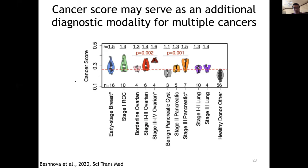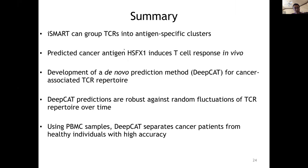We also used independent cohorts to validate cancer score, including early-stage kidney cancer, ovarian cancer, pancreatic cancer from UT Southwestern, and early-stage lung cancers. Cancer scores are almost always higher in those cancer patients compared to healthy donors. This means that this novel cancer score might be used as an additional diagnostic modality for non-invasive detection of multiple cancers at early stage. To summarize: we developed ISMART to group TCRs into antigen-specific clusters, we predicted a novel cancer-associated antigen HSFX1, and we developed the DeepCat algorithm to predict cancer-associated TCR repertoires. Our cancer score can separate early-stage cancer patients from healthy individuals with really high accuracy.